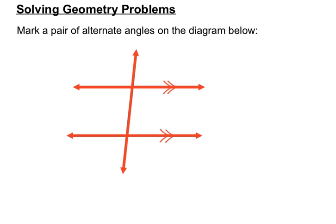You're asked here to mark a pair of alternate angles on the diagram. Do you remember what alternate angles were? They're on alternate sides of the transversal and they're in between the parallel lines. So there are a couple of alternatives. Alternate angles could be here on the left-hand side and the right-hand side, both between the two parallel lines. Or another pair of alternate angles could be those two.